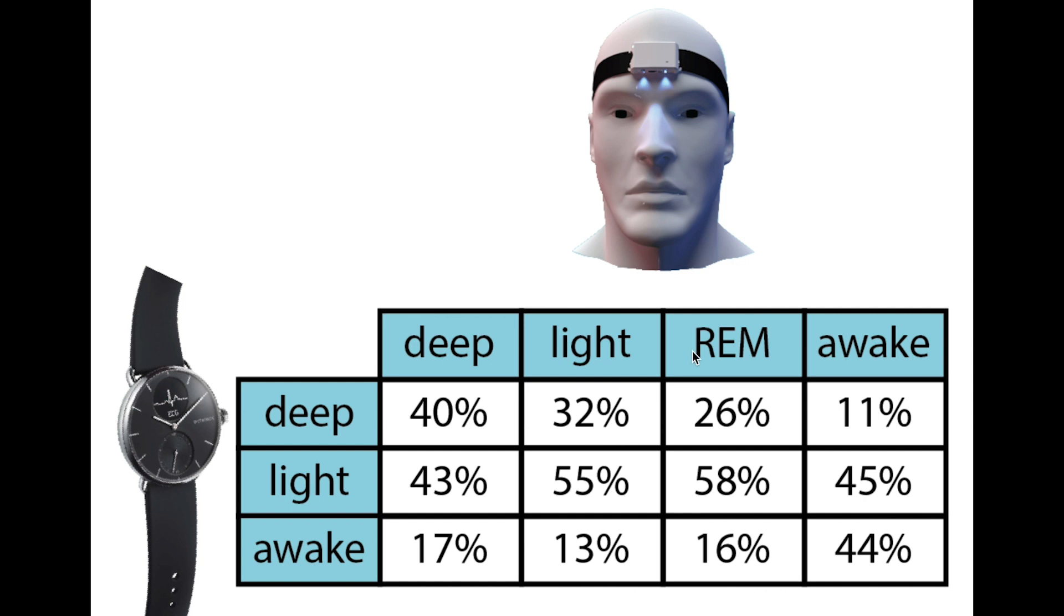So one thing I was really curious about was REM sleep because the ScanWatch cannot predict REM sleep so what does it actually say REM sleep is? And we see that most of it is light sleep but it's also predicted as some deep sleep and some awake. And given the fact that I spent most of my night in light sleep it makes sense that it mostly says it is light sleep.